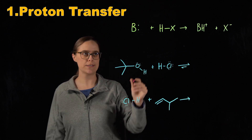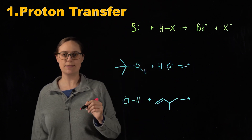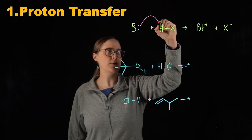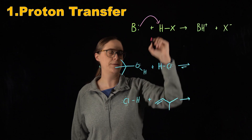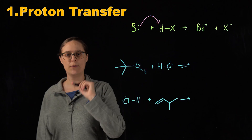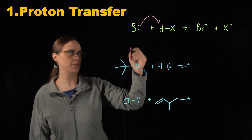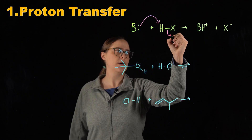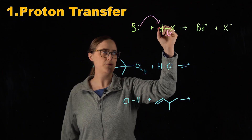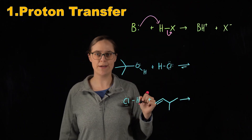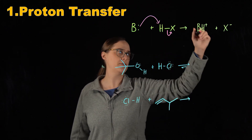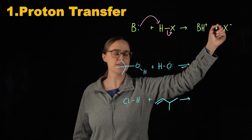B and X are both variables, but B is something that's electronegative. What's going to happen is electrons from B are going to attack this acidic hydrogen, and a new bond is going to form between B and H. However, hydrogen can only form one bond at a time. So as soon as this bond forms, hydrogen's other bond is going to break. The two electrons in the bond between H and X are going to go entirely to X. So you are literally just seeing H plus move from one thing to another, giving us B-H plus and X minus.